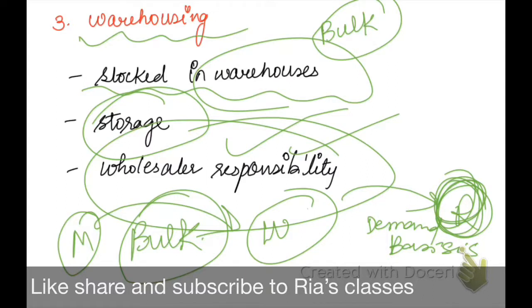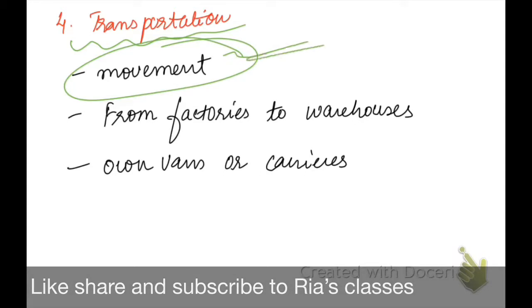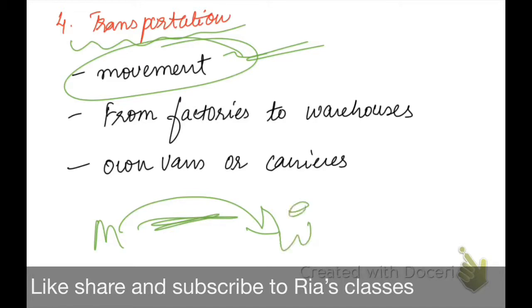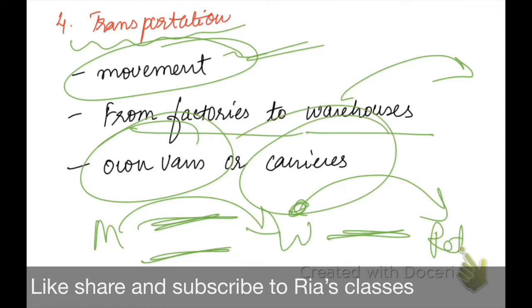The next function is transportation. The movement of goods is on both sides — from the manufacturer to the warehouse, and further from the warehouse to the retailers. This transportation is handled either by vans or by a carrier, covering the movement of goods from factories to warehouses and onward to retailers.